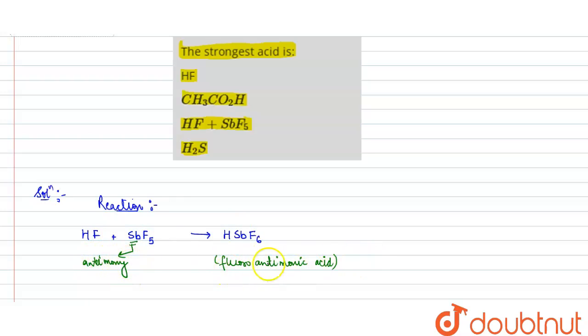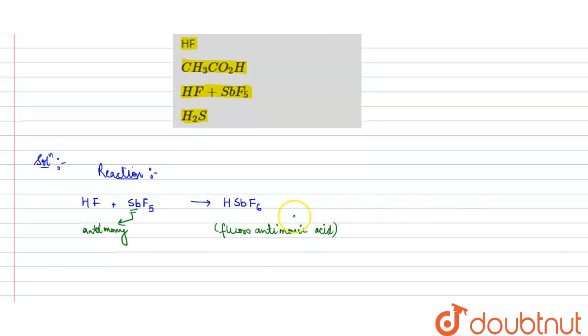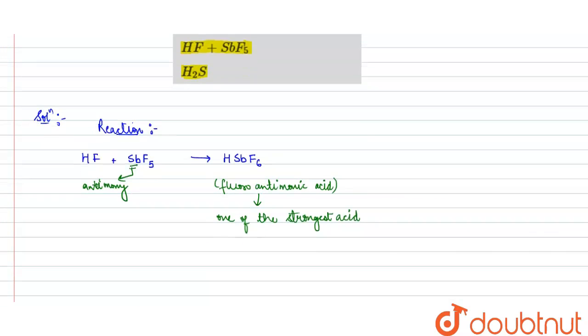Now, this fluoroantimonic acid is one of the strongest acids found, and it belongs to the category of sulfuric acid. So it is highly corrosive.